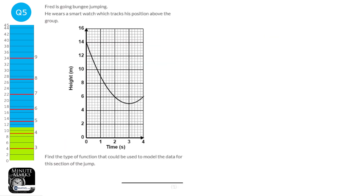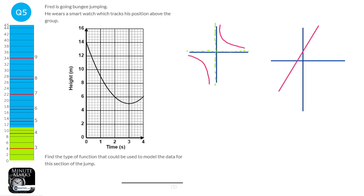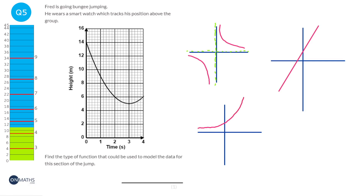For this question we need to understand the different types of graphs from different functions. A reciprocal graph looks like this — it goes down to a point, goes to infinity along one axis, and goes to infinity along another. A linear graph is just any straight line, either up or down, and this doesn't look like either of those. An exponential graph starts really small and then really increases, just keeps going up — and here it's actually going up, so it can't be a reciprocal graph.